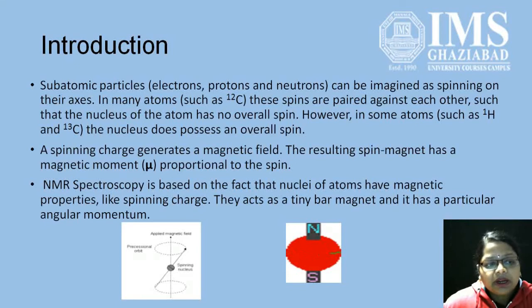NMR spectroscopy, or nuclear magnetic resonance spectroscopy, is based on the fact that nuclei of atoms have magnetic properties like spinning charges. Since they have these magnetic properties, they can act as tiny bar magnets and have a particular angular momentum.